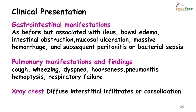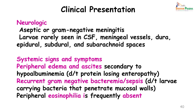Radiological diagnosis by chest X-ray would show diffuse interstitial infiltrates or consolidation. In cases where worms have migrated to other sites, neurological symptoms such as aseptic or gram-negative meningitis may occur. Larvae are very rarely seen in the cerebrospinal fluid, meningeal vessels, dura, epidural, subdural, and subarachnoid space. Associated systemic signs include peripheral edema and ascites secondary to hypoalbuminemia, and recurrent gram-negative bacteremia or sepsis. Notably, eosinophilia is frequently absent in these patients.